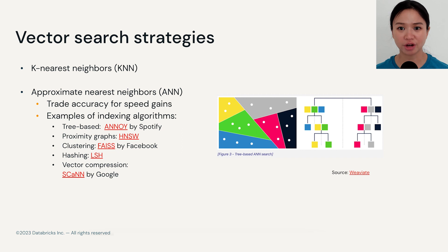In vector search, there are two main strategies: exact search and approximate search.